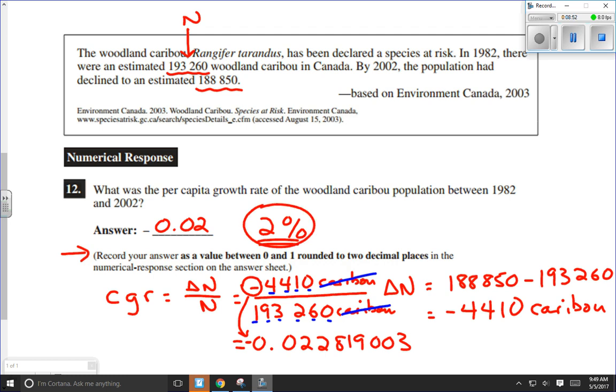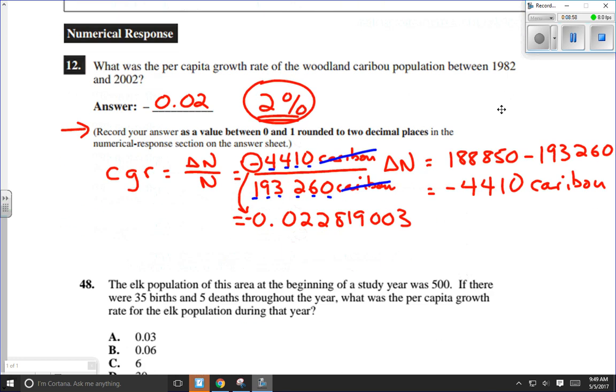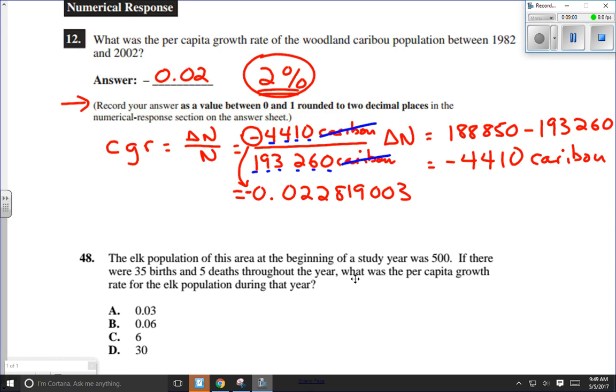So there's one where we were just given the population before and the population after. Now let's look at one where we're actually told how many died, and how many moved in, and how many moved out, and so on. So we'll have to do a little rearranging.